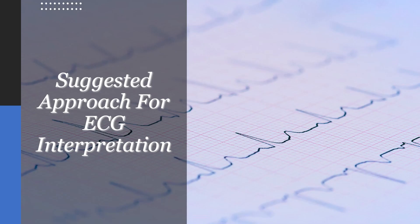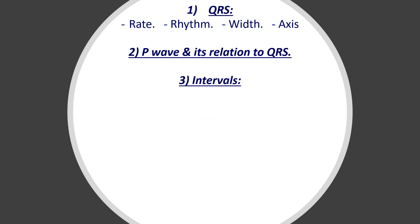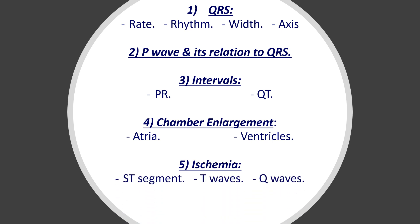As we said before, there is a suggested approach that I would like you to follow. Always look at the QRS and ask yourself four questions: What's the rate doing? What's the rhythm doing? What's the width like, and what's the axis doing? Then have a look at the P waves and their relation to the QRS. Have a look at the two important intervals — PR interval and QT interval. Then check for chamber enlargement, signs of ischemia including the ST segment, T waves, and Q waves, and then anything else.